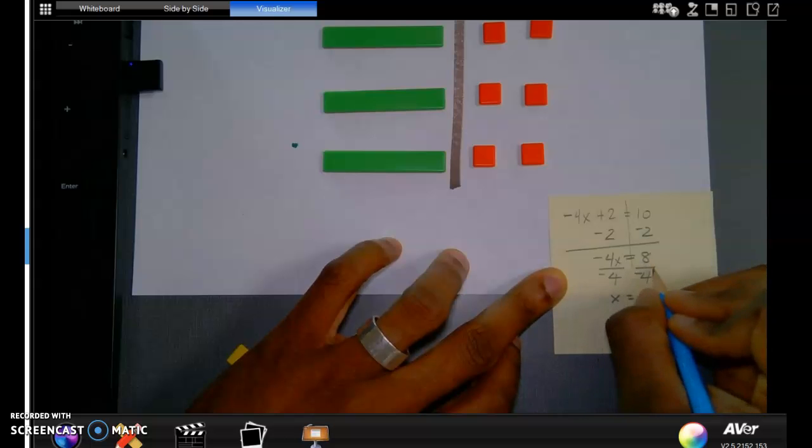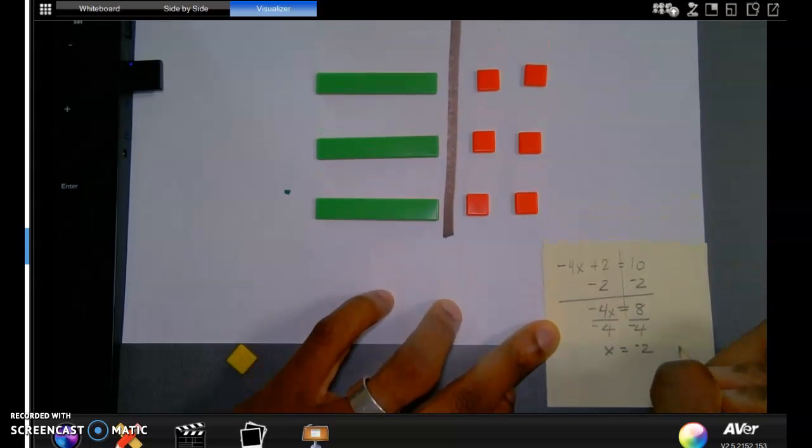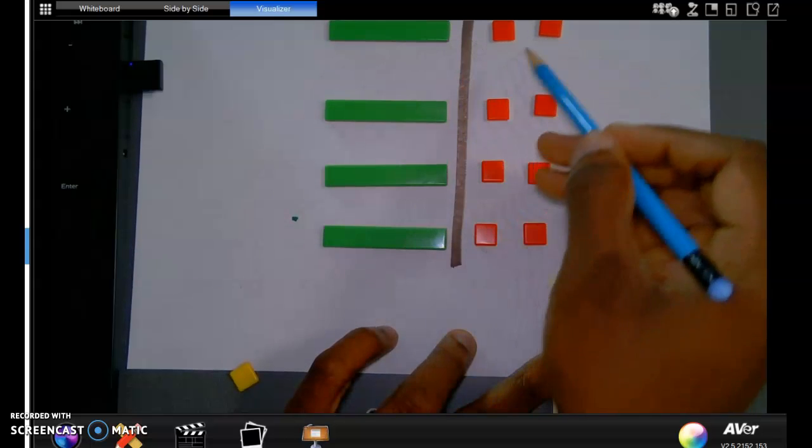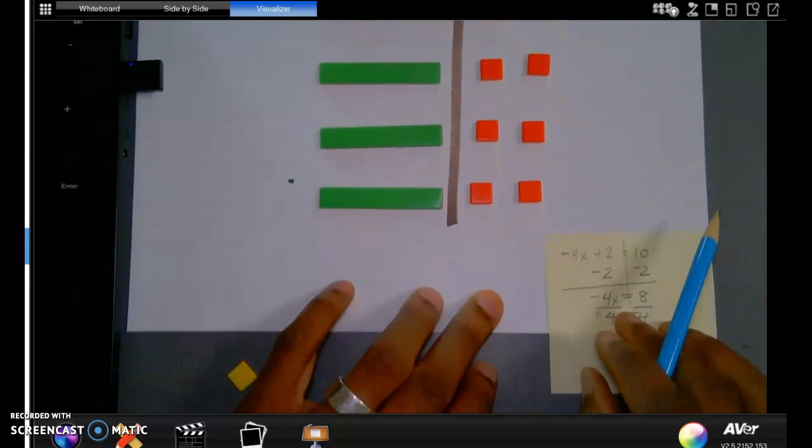And eight divided by negative four becomes a negative two. So as you notice, I modeled switching each of these to a positive x, switching those to negative two. X is equal to negative two.